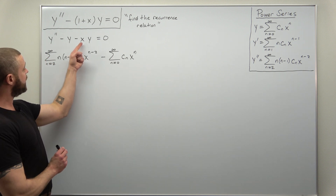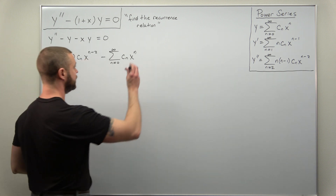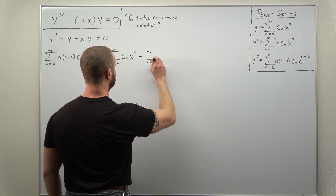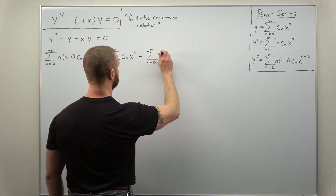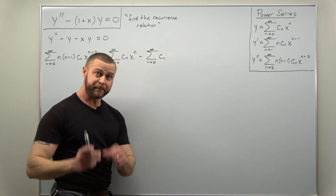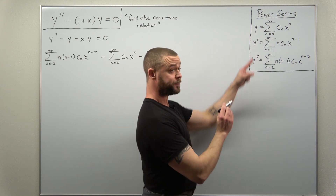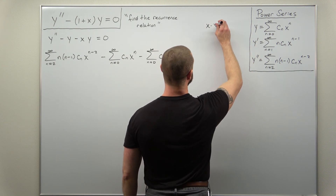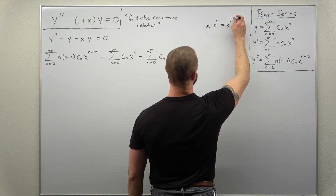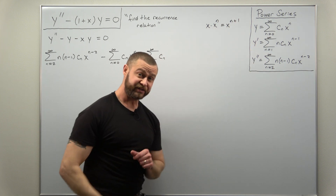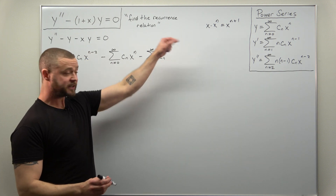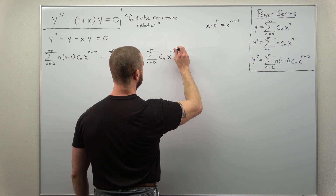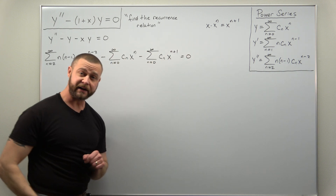Now let's put in the power series for xy, which again has a minus. That goes from n equals 0, we have c sub n, and since we're multiplying y by x, we're going to increase the exponent — since x times x to the n is x to the n plus 1. So your power of x here is x to the n plus 1, and the right-hand side is 0.